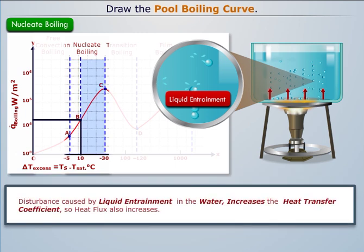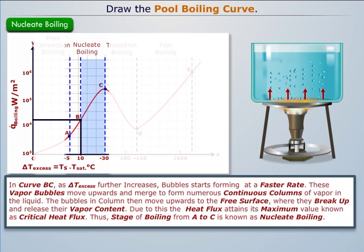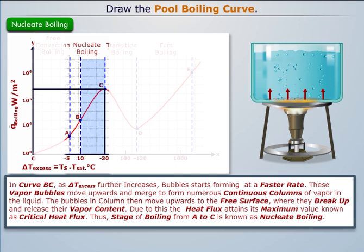The disturbance caused by liquid entrainment in the water increases the heat transfer coefficient, so the heat flux also increases. In curve BC, as Delta T excess further increases, the bubbles start forming at a faster rate. These vapor bubbles move upwards and merge to form numerous continuous columns of vapor in the liquid. The bubbles then move upwards to the free surface where they break up and release their vapor content. Due to this, the heat flux attains its maximum value, known as critical heat flux. The complete stage from A to C is known as nucleate boiling.